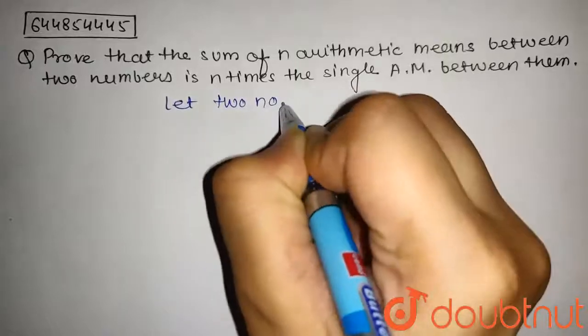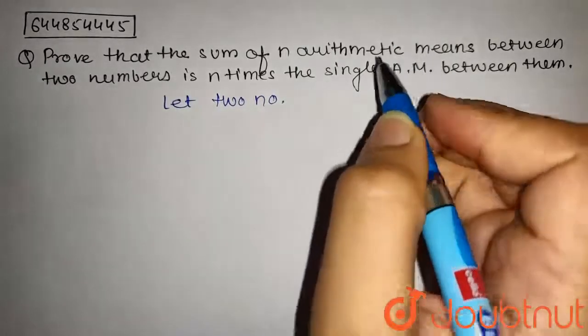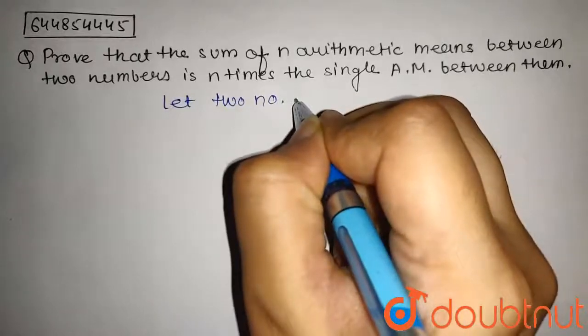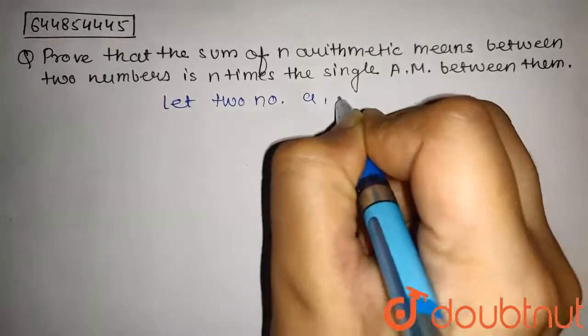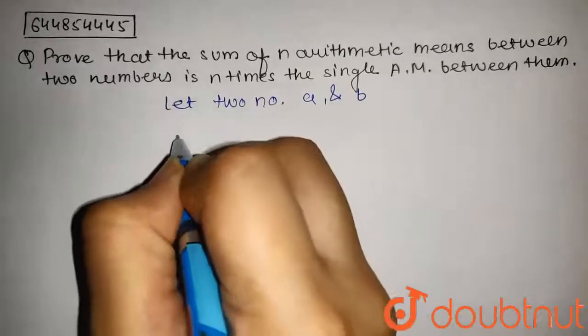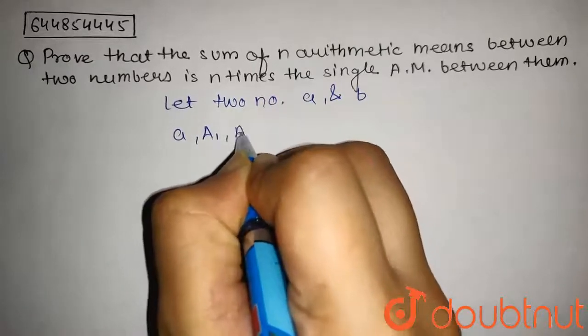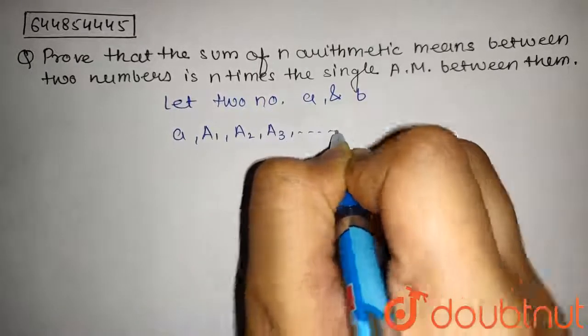Let the two numbers in which n arithmetic means are inserted be a and b. The resulting sequence will be a, A₁, A₂, A₃, and so on till Aₙ, comma b. These are the n arithmetic means.